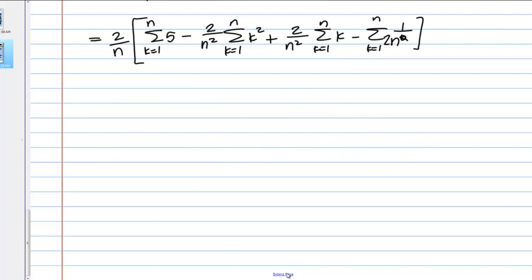Alright, and now I just use my sum formulas. So, the sum of a constant was 5 times N, or that constant times N, so 5N in this case, minus 2 over N squared, and now the formula for k squared, which was N, N plus 1, 2N plus 1 over 6, plus 2 over N squared times the sum of k, so that's N, N plus 1 over 2, minus, and here we have the sum of the constant, so it's just that constant times N.